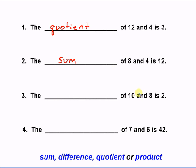The blank of 10 and 8 is 2. Well, if we subtract 8 from 10, then we get 2. And subtraction is difference. So we have the difference of 10 and 8 is 2.